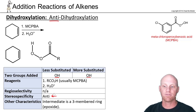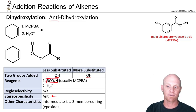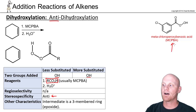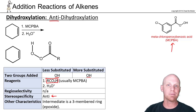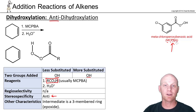The stereospecificity is anti here because it goes through a three-membered ring intermediate. You can technically use any peroxy acid, or peracid for short. But hands down, the most common peroxy acid you'll see is metachloroperoxybenzoic acid — MCPBA. I like to think it's a Canadian who likes peanut butter: 'me crave peanut butter A.' Hopefully that helps you remember that MCPBA is a peracid.